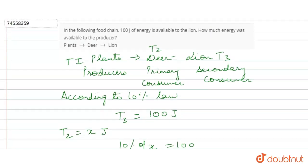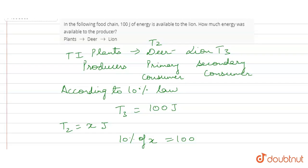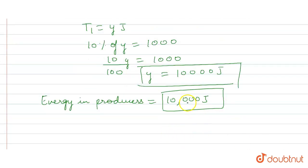10% of this went to deer, which was 1000 joules. 10% of that went to lion, which was 100 joules. So how much energy was available to the producer? 10,000 joules energy was available to the producers.